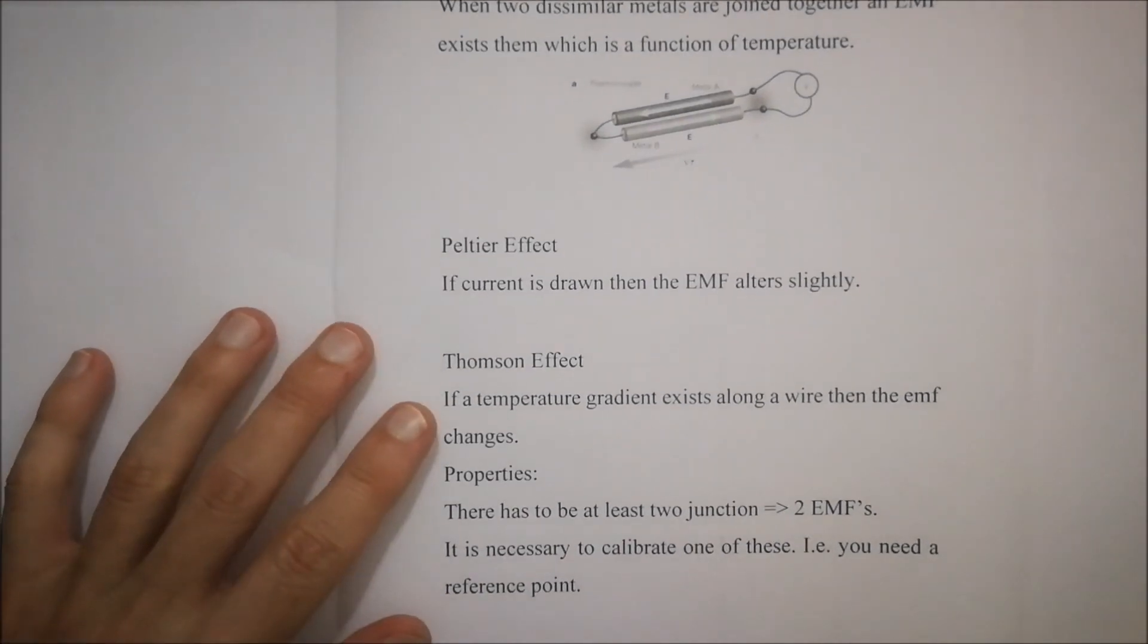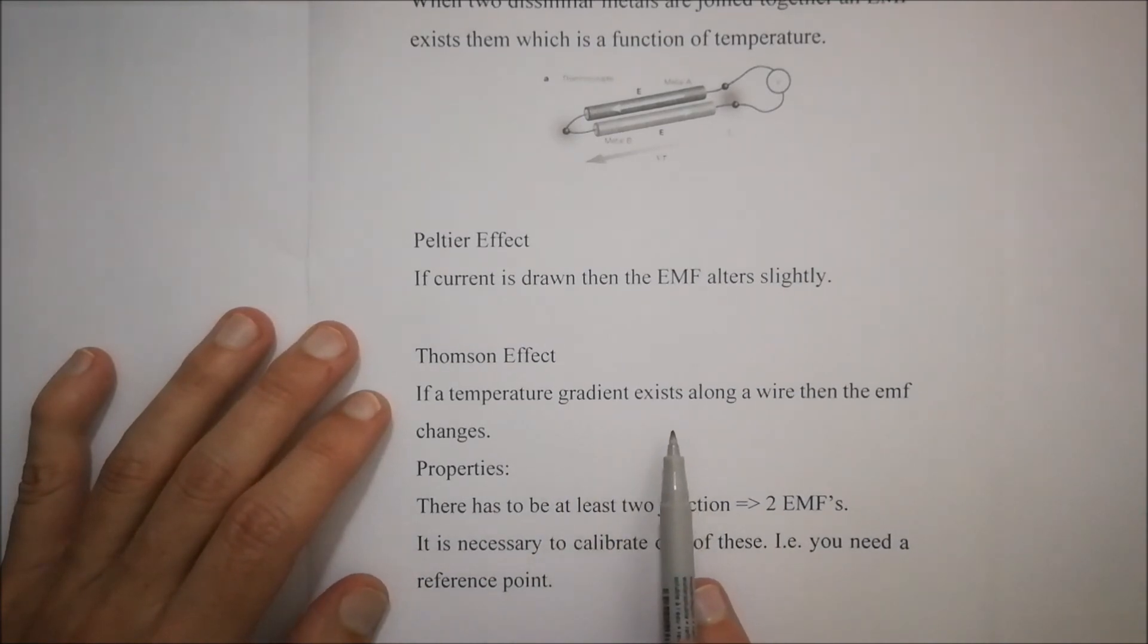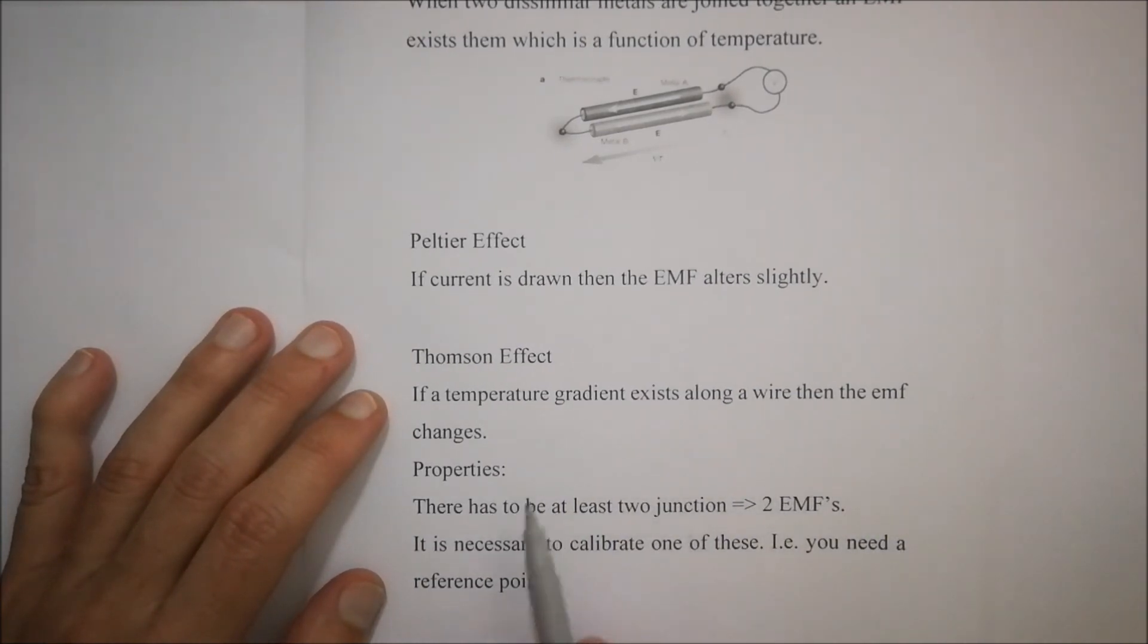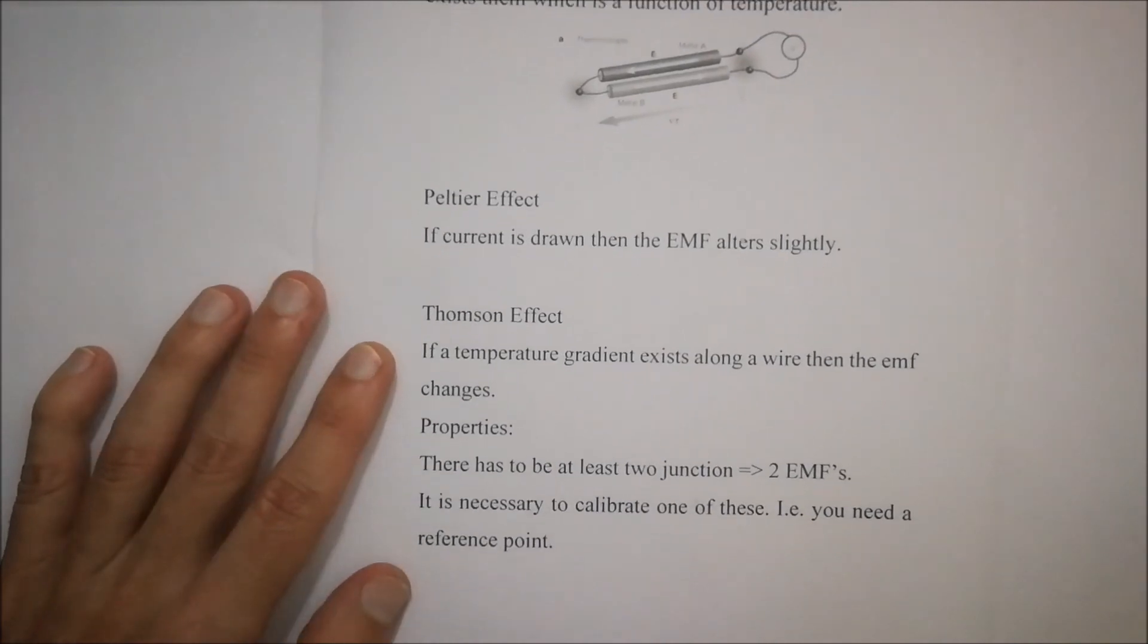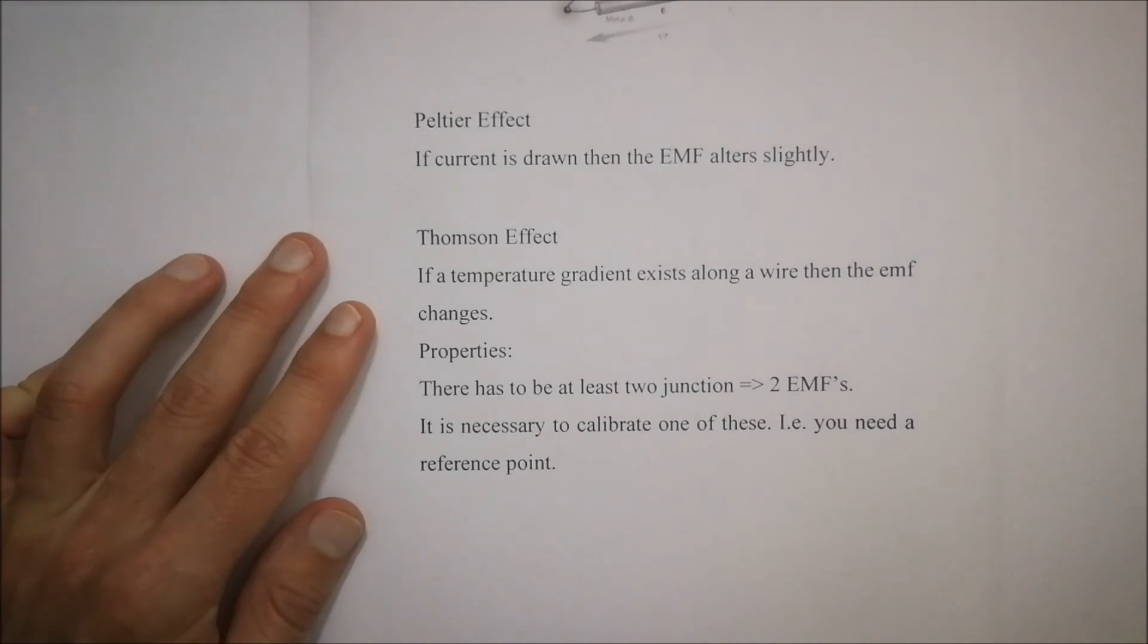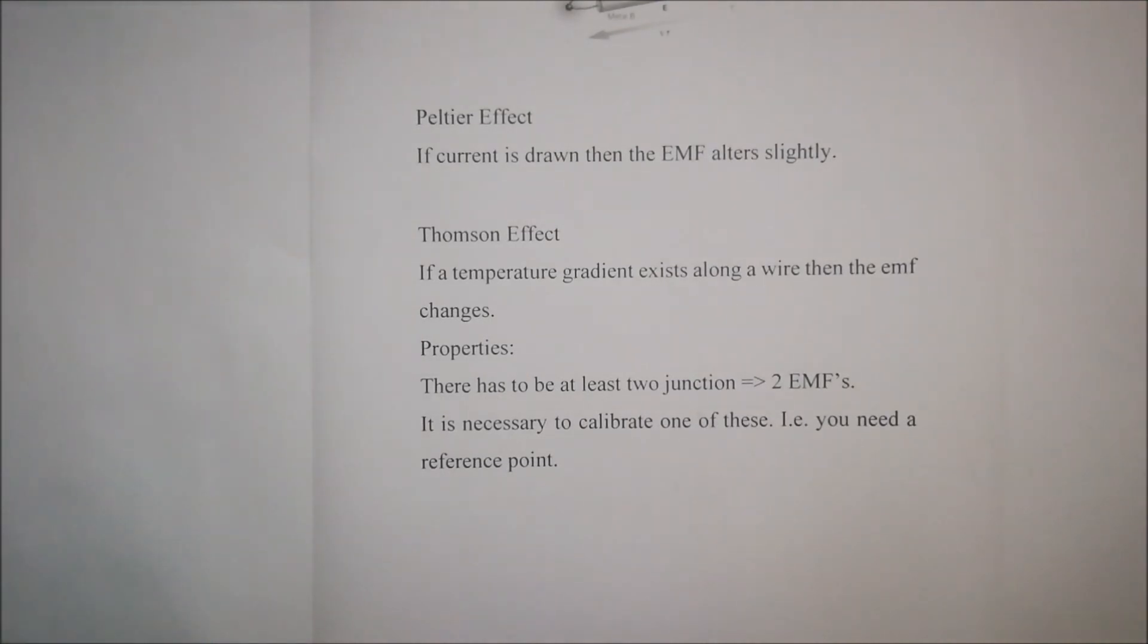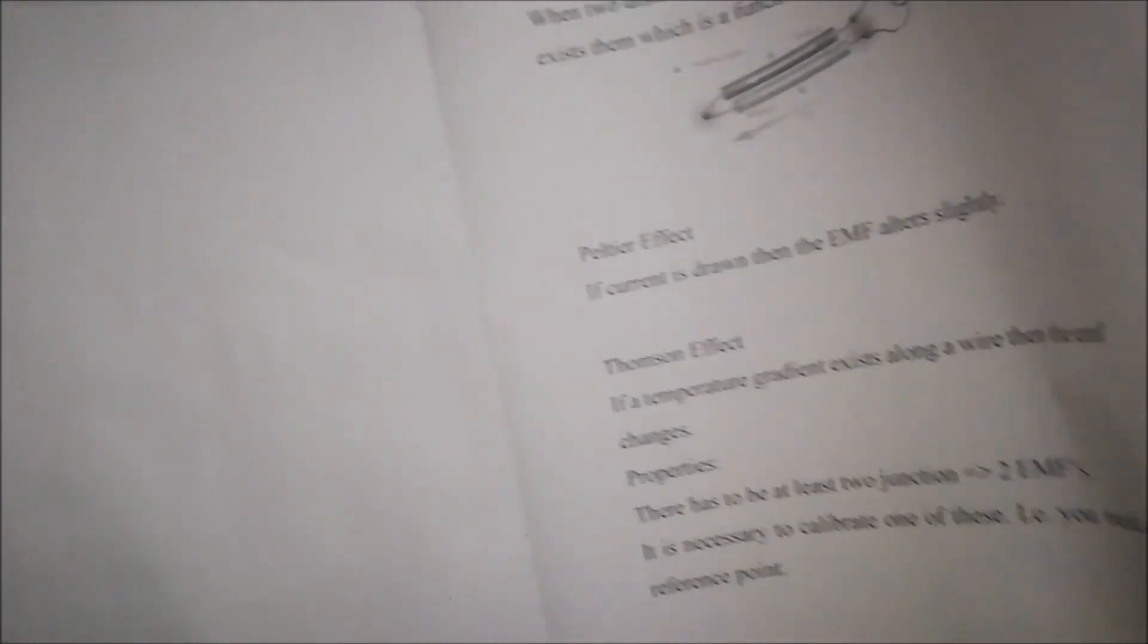And then we've got the Thompson effect. If a temperature gradient exists along a wire, then an electromotive force changes. So the properties of your Thompson effect is that there has to be at least two junctions or two EMFs, and it's necessary to calibrate one of these. In other words, you need a reference point.